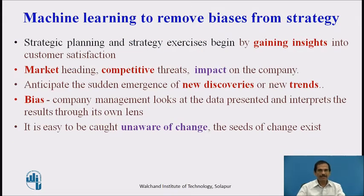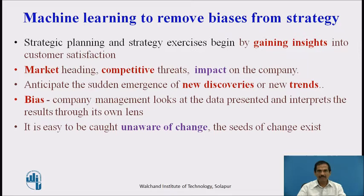Machine learning has proved to be more efficient when we remove the biases from our strategy. Machine learning strategic planning begins by gaining insights into customer satisfaction — whether giving a reward, a discount, or a free gift to the customer is most advantageous is what we have to analyze.